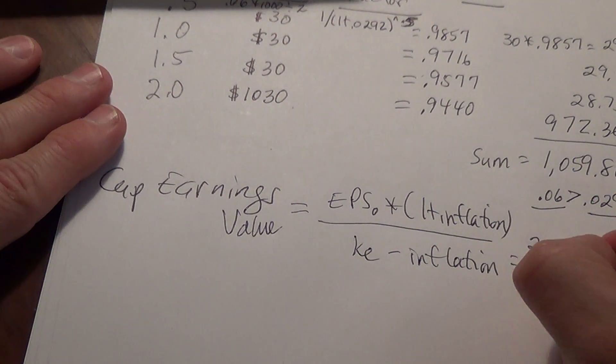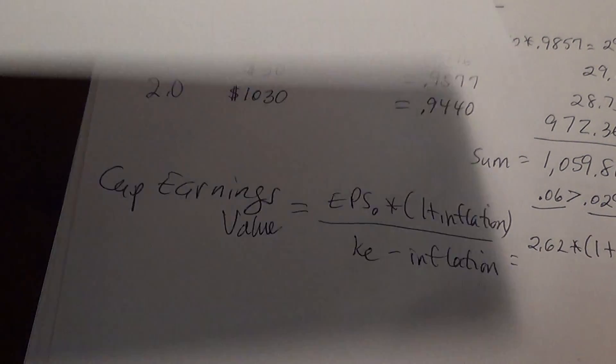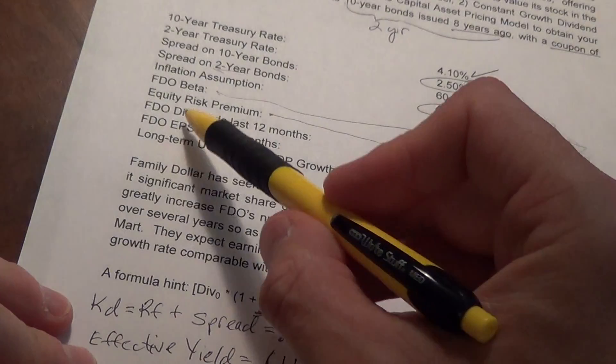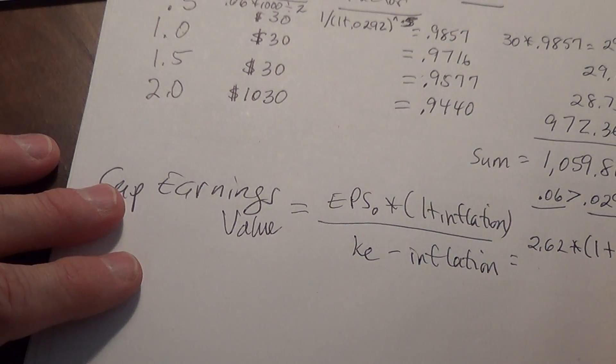Our inflation rate, one plus our inflation rate, we go back and look at our inflation rate assumption. It's given as 2.5 percent, so plus 0.025.